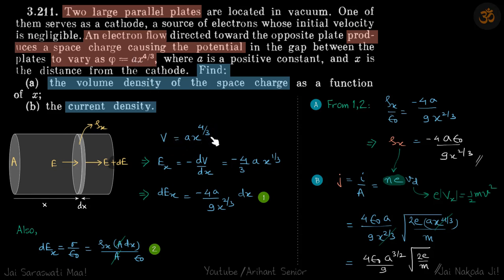v is equal to ax power 4 by 3. Which means Ex is equal to minus dv by dx and it is minus 4 by 3 ax power 1 by 3.